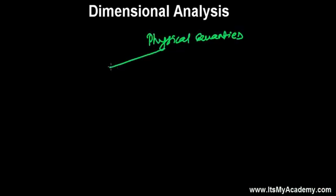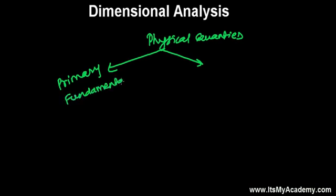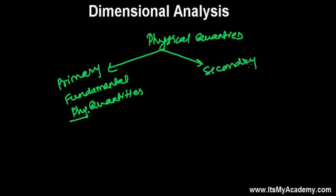These all are physical quantities, and in Physics while studying the universe, we divide all physical quantities into two sections. The first one is primary — or more commonly called fundamental physical quantities. The other is secondary, also called derived physical quantities.